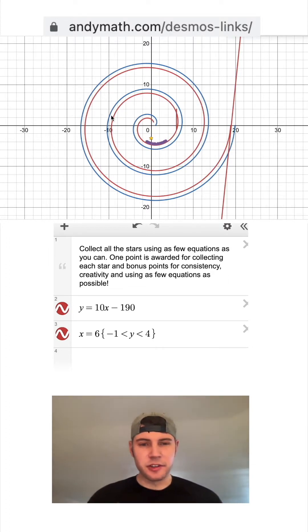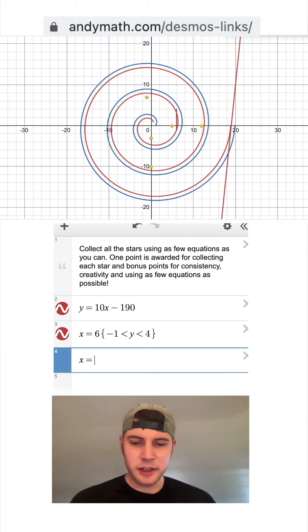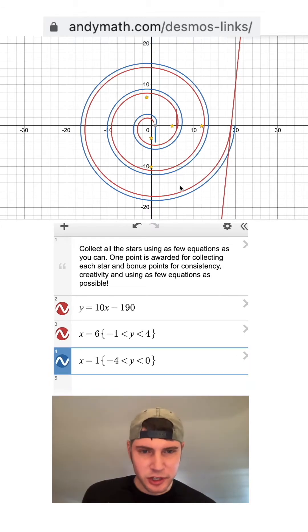It still misses this other star. So we almost need to put another line here as well. We'll say X equals one. And let's do that from negative four is less than Y is less than zero. That should cause the marbles to go around, hit this ramp and hit that star and then go under here and then shoot down and hit that star. But we gotta make this a little bit more interesting.